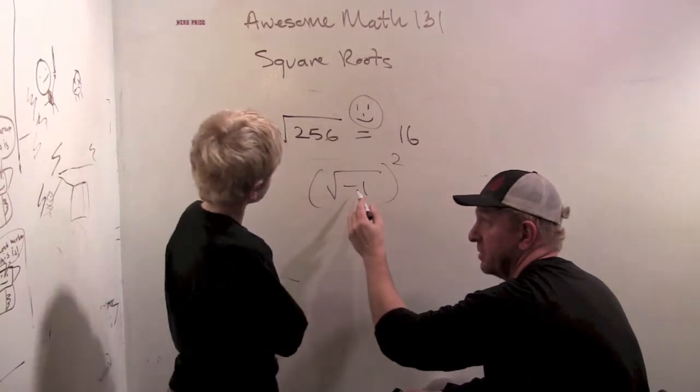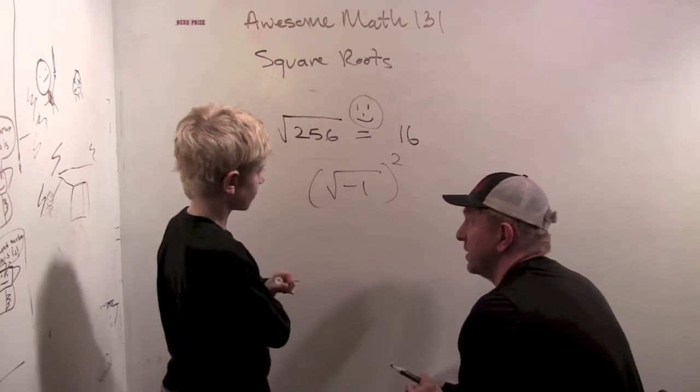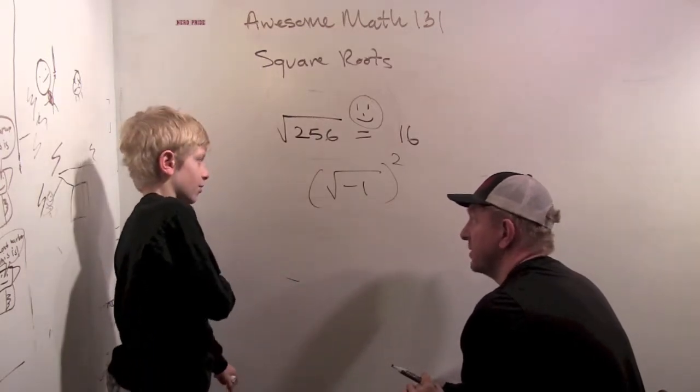Right now because we've defined the square root to only take positive or non-negative numbers as inputs. It can take 0 as an input if you want. Right now we wouldn't know how to do this. Maybe nobody knows how to do this.